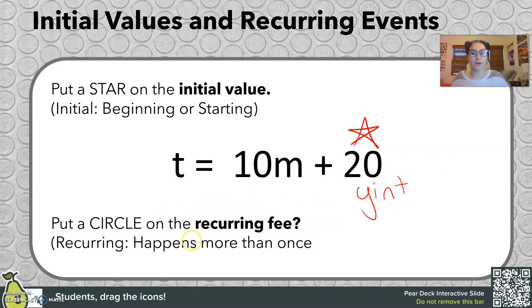And then what is the recurring fee? That's something that happens more than once. So our recurring fee is $10. It's recurring. It happens more than once. This initial value only happens once. So we'll circle our recurring fee. So our recurring fee is like our slope. And the initial value is our y-intercept.